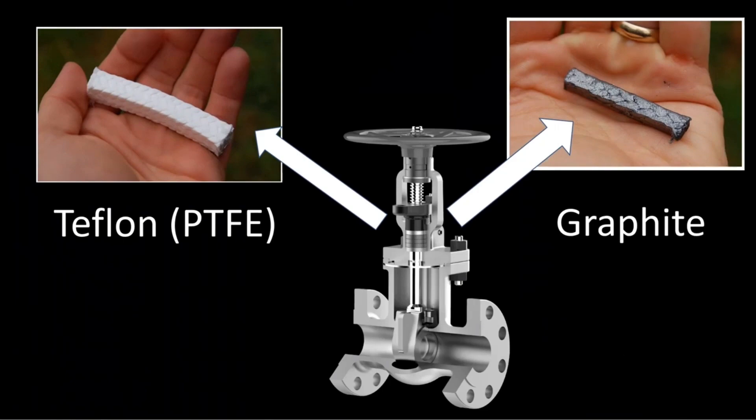If you see picture one, PTFE is around something you could say whitish complexion, and graphite is shiny blackish in color, which is also sometimes referred to as flexible graphite.